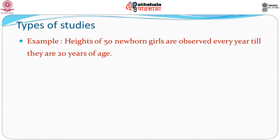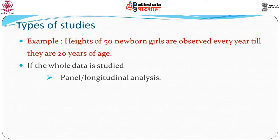Let us distinguish time series analysis from other types of analysis through an example. Consider the heights of 50 newborn girls observed every year until they are 20 years of age. If the whole dataset — 50 girls over 20 years — is studied together, we have what is referred to as panel or longitudinal analysis. In economics it is called panel analysis; in biostatistical studies it is called longitudinal analysis, though the techniques can be slightly different.